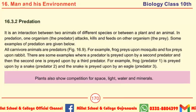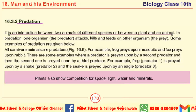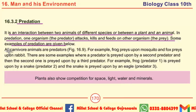The next interaction is predation. Predation is an interaction between two animals of different species, or between a plant and an animal. In predation, one organism — the predator — attacks, kills, and feeds on the other organism, the prey. All carnivore animals are predators. This is an important MCQ. Plants also show competition for space, light, water, and minerals.